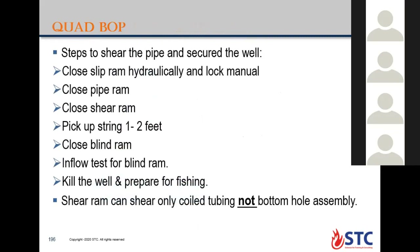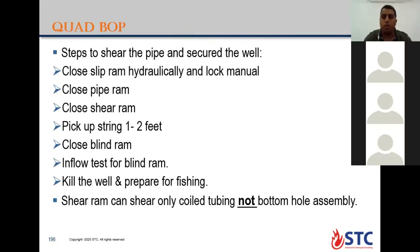Steps to shear the pipe and secure the well with the quad BOP: close slip ram with hydraulic pressure and lock manually; close pipe ram and lock manually; close shear ram; pick up string one to two feet or one meter so there is no coil tubing through the blind ram; close blind ram; perform inflow test for the blind ram to check there is no leakage; then prepare for fishing or killing the well. The shear ram can shear only coil tubing pipe, not bottom hole assembly — but if the bottom hole assembly is small or the same diameter as the coil tubing, it can be cut by mistake when operating shear ram as last option.